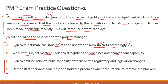Option B: work with subject matter experts to streamline the processes and enable team capability. Prima facie this may seem like a very generic option — let's hold it for now. Option C: plan the next iteration to build capability of the team on the regulatory and legislation changes. You could say the next iteration will be dedicated to taking your team through the details of these changes — but will it move you forward toward developing the product? Probably not.